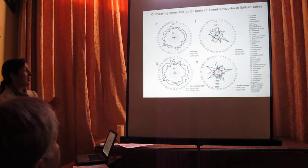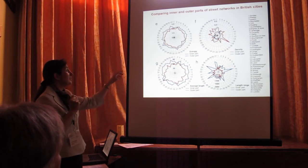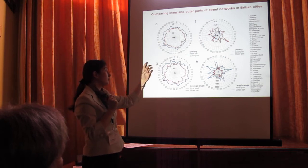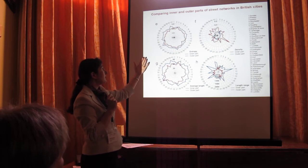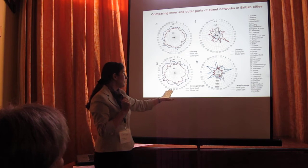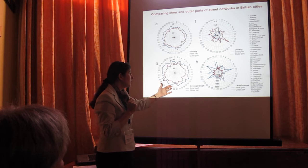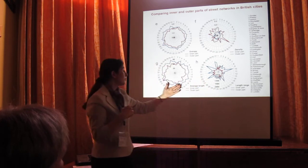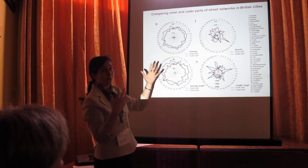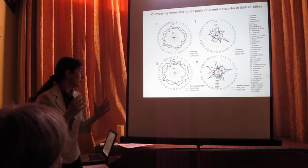I looked at more parameters for the 41 British cities. Shown in red for the inner part and blue for the outer part: the inner part has lower entropy than the outer part. The average street length is lower for the inner part compared with the outer part. Similarly for the length range, it is lower in the inner part than the outer part, while density in the inner part is higher than the outer part.